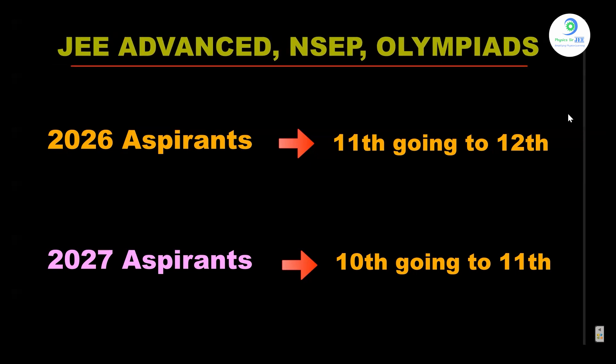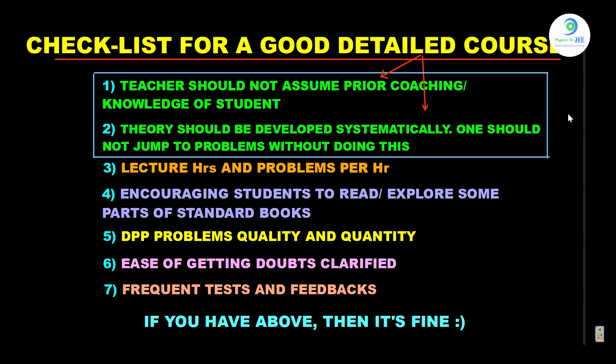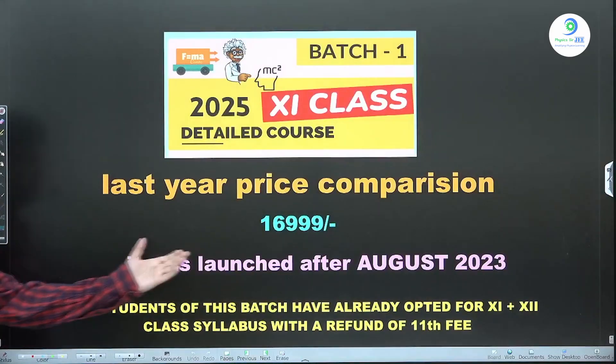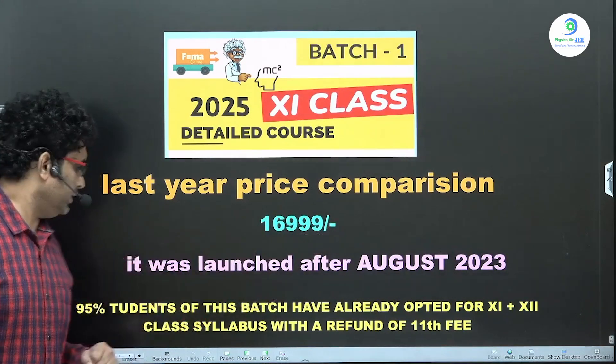The queries are about what checklists you should look for when joining a good detailed course. A detailed course is something that doesn't assume the students already have prior coaching, but ensures students start from the very basics, takes them through a journey of understanding concepts, then moves on to JEE Advanced level, and finally to Olympiads if required.